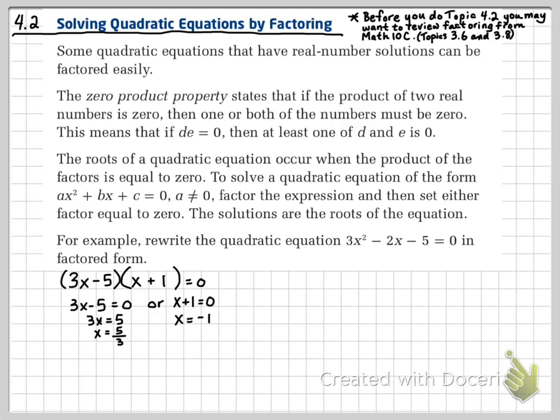For x + 1 = 0, we can subtract 1 from both sides, and we get x = -1. So these are our two solutions to our quadratic equation, or as we call them, the roots of our quadratic equation.